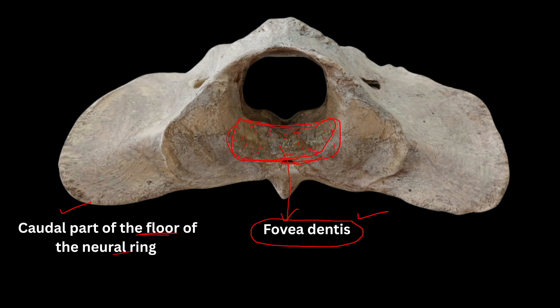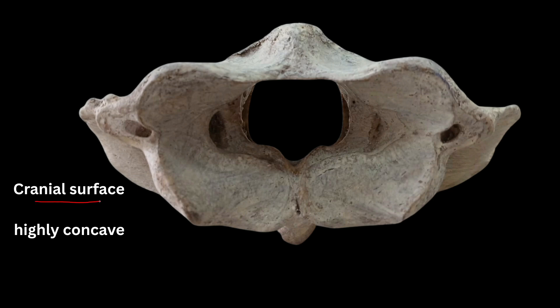The fovea dentis articulates with the odontoid process or dens of the axis. Looking at the cranial surface of the vertebra, the cranial surface is highly concave — it accommodates the occipital condyles of the skull.